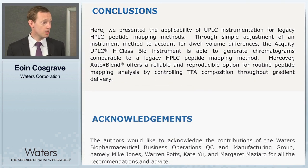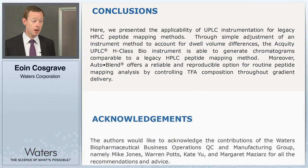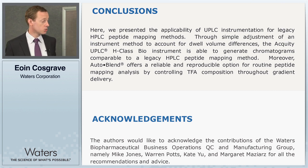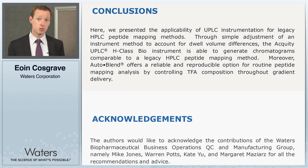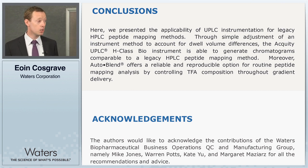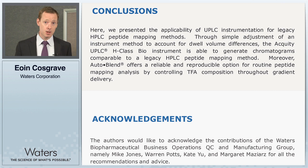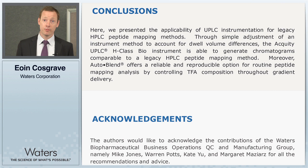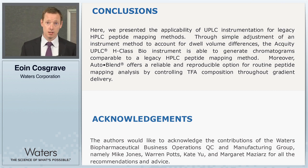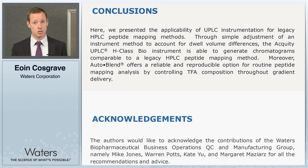In conclusion, we've demonstrated how we can use the Acquity H-class Bio for running legacy HPLC peptide mapping methods. By making a simple adjustment to the instrument method to account for differences in dwell volumes, we've achieved near-identical chromatography between two different instruments. Including an acidic modifier on a third solvent line with AutoBlend delivers precise, reproducible measurements. The H-class Bio is therefore a perfect instrument for both running HPLC legacy methods and transitioning into UPLC methods in the future. Thanks very much for your attention.